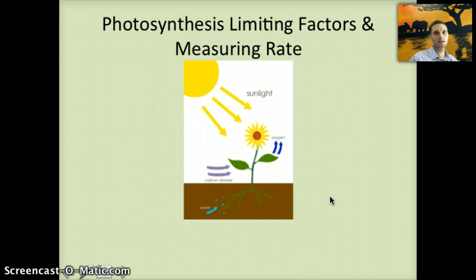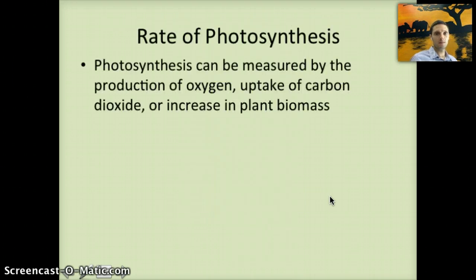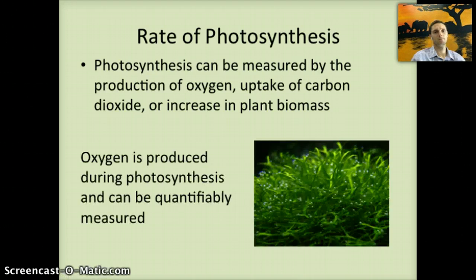The rate of photosynthesis can be measured by the production of oxygen, the uptake of carbon dioxide, or an increase in plant biomass. Since oxygen is a byproduct of photosynthesis and carbon dioxide is an input, we can measure the amount of oxygen output during the process in a quantifiable way. One of the easiest methods is using a Vernier scientific probe to measure the amount of oxygen released in a closed environment.